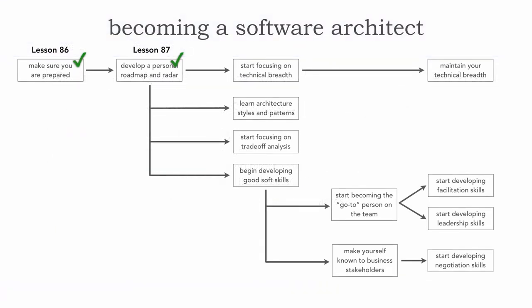Back in Lesson 86, we took a look at how to make sure you're prepared for the journey to become a software architect, as well as some of the expectations of an architect. Then in Lesson 87, we looked at how to develop a personal roadmap and radar. If this is the first lesson you're seeing, I would encourage you to pause and go back and take a look at Lessons 86 and 87 before continuing.